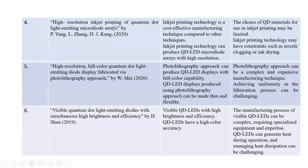The third paper is on high resolution inkjet printing of quantum dot light emitting micro diode arrays, published in 2020. The pros are that inkjet printing is a cost-effective manufacturing technique that can produce QD LED micro diode arrays with high resolution. The cons are that the choice of QD materials for inkjet printing may be limited and the technology may have constraints such as nozzle clogging or ink drying.